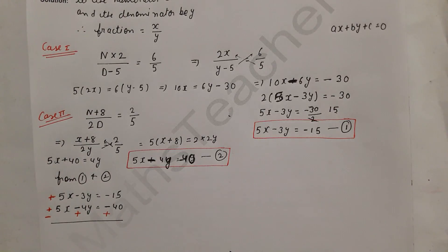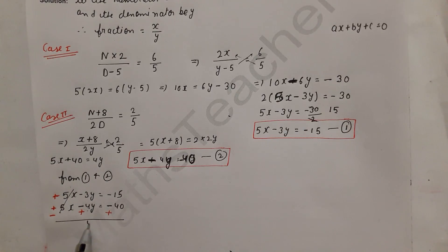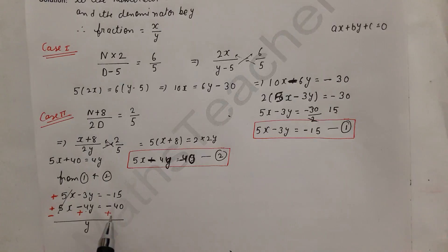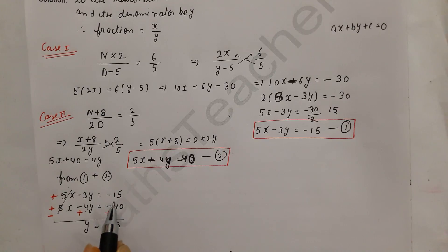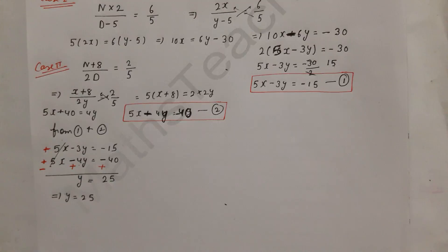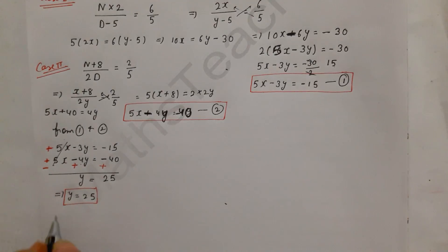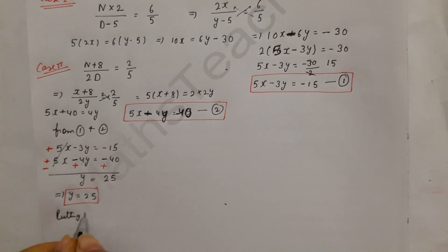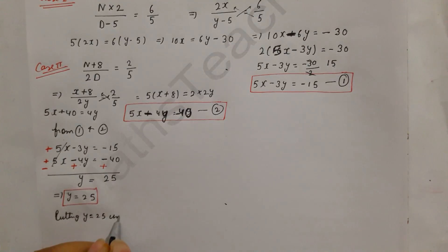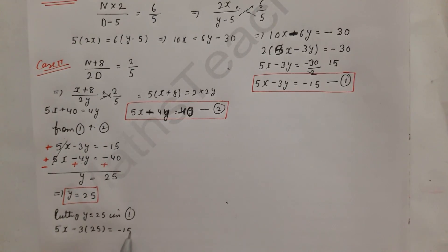After subtraction: minus 3y minus (minus 4y) gives plus y, and minus 15 minus (minus 40) gives plus 25. So y equals 25. Now we substitute y equals 25 into equation number one: 5x minus 3 times 25 equals minus 15.